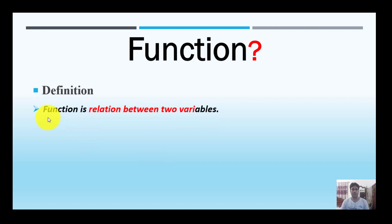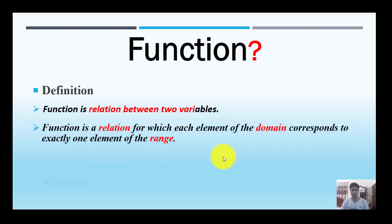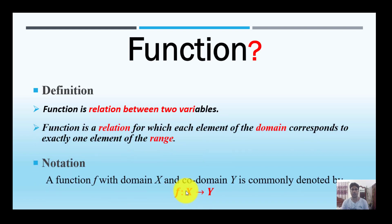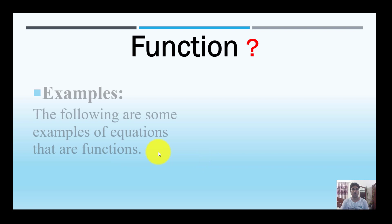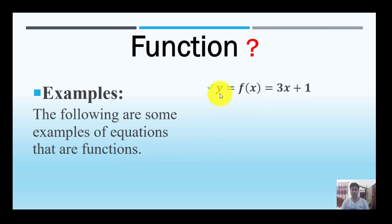A function is the relation between two variables. The notation is f such that x maps to y, written as x arrow y. For example, y = f(x) = 3x + 1. Here x is the input and x is the independent variable, and y is the dependent variable.